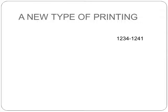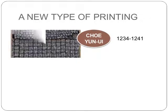The next topic is a new type of printing. Between 1234 and 1241, an official in Korea named Choyun-Oi made metal letters for printing. So before this, China had made letters from clay baked in a fire, but Choyun-Oi made them from metal. However, for a long time, printing was only allowed for books for the government.